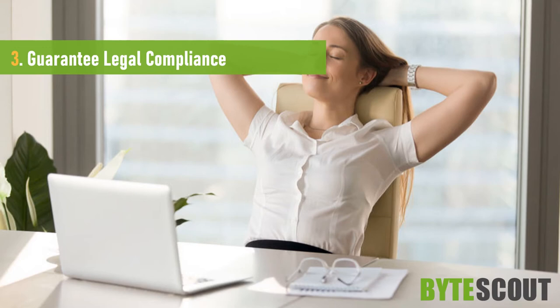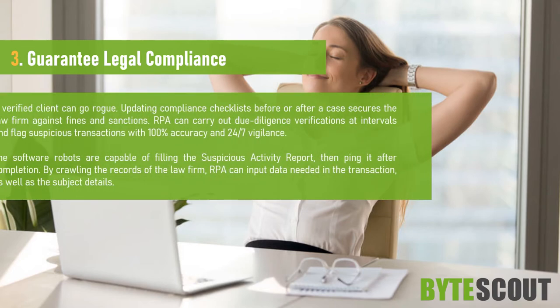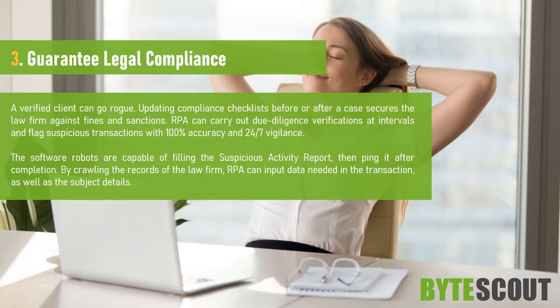Guarantee legal compliance. A verified client can go rogue — updating compliance checklists before or after a case secures the law firm against fines and sanctions. RPA can carry out due diligence verifications at intervals and flag suspicious transactions with 100% accuracy and 24/7 vigilance. The software robots are capable of filling the suspicious activity report and pinging it after completion. By crawling the records of the law firm, RPA can input data needed in the transaction as well as the subject details.